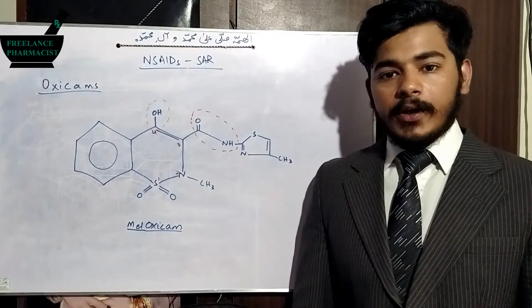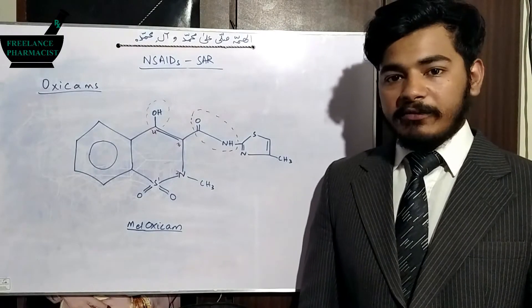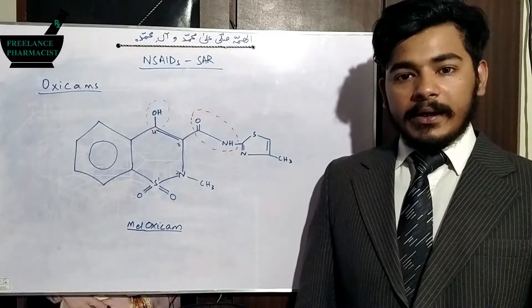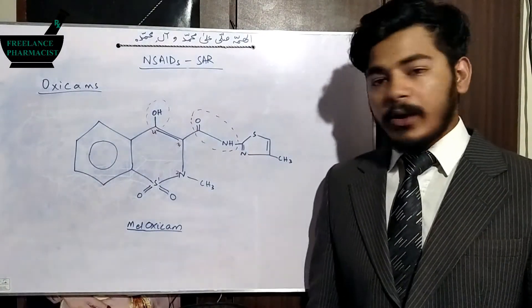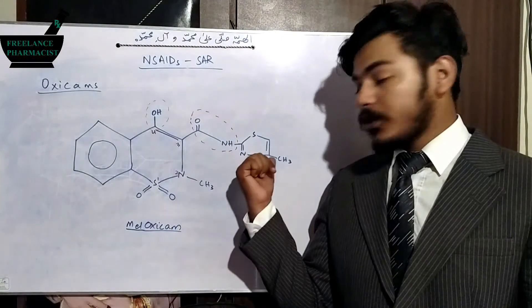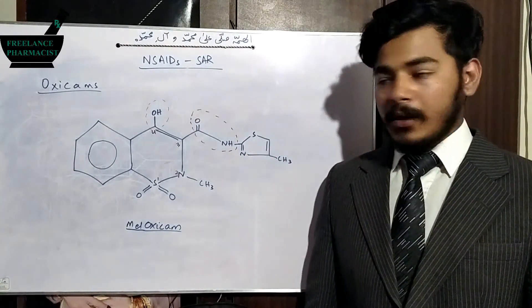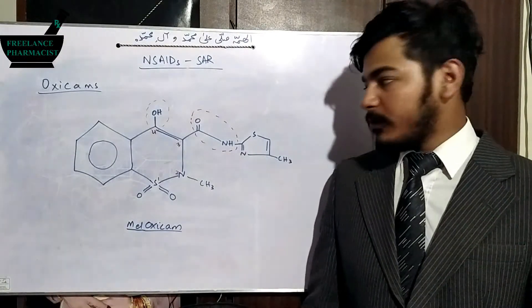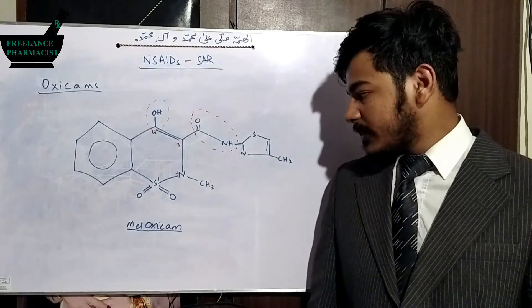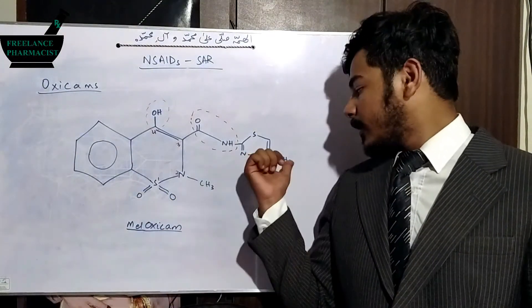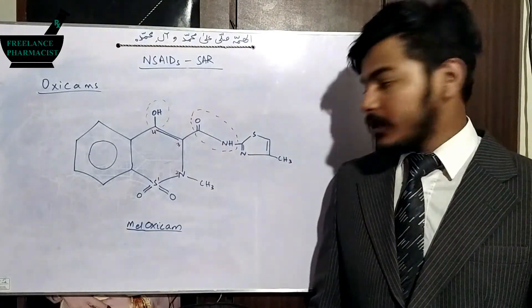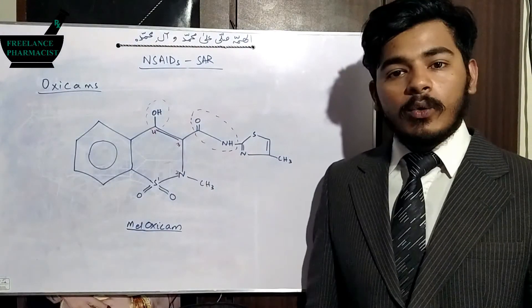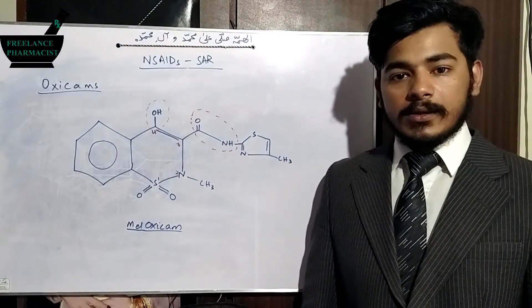The next and last drug of the oxicam class is meloxicam. The only difference between meloxicam and piroxicam is the modification: in piroxicam a pyridine substitution was present, but in meloxicam a thiazole substitution is present, to which a methyl is attached. This methyl protects the thiazole ring. The rings increase the drug's lipophilicity, the heterocyclic atoms increase potency, and the carboxamide also increases potency. The enolic OH gives the NSAID effects to this drug.